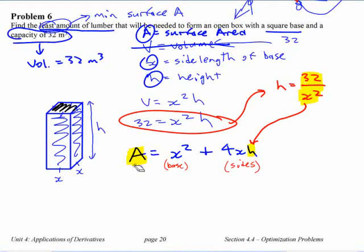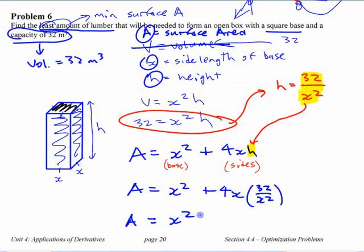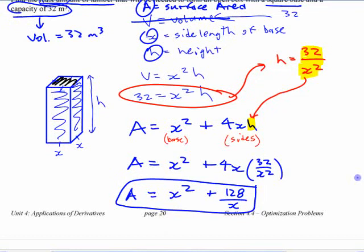So when you do that, make my brackets look a little better, 32 over x squared, you can simplify it. x squared plus that simplifies to - what does that simplify to? 128 over x. This is the function you want to find the maximum or the minimum of.